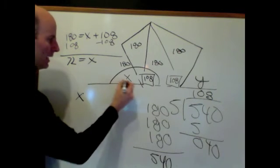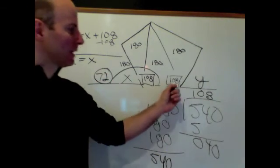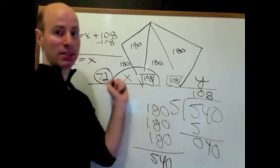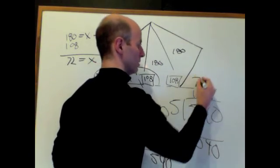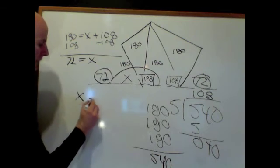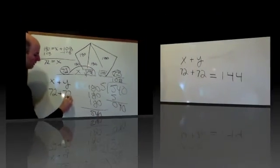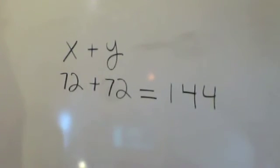72. Alright, so x is 72. I think it makes sense that if we're looking for the supplement of 108, and that's going to be 72, the supplement of 108 is also going to be 72. So when we have this question here, x plus y, it's really saying what 72 plus 72 is, which equals 144 degrees.